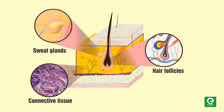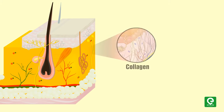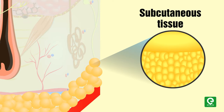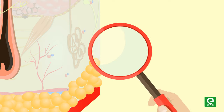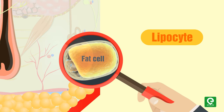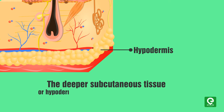The dermis is beneath the epidermis and it contains tough connective tissue, hair follicles, and sweat glands. The dermis is fundamentally made up of the fibrillar structural protein known as collagen.